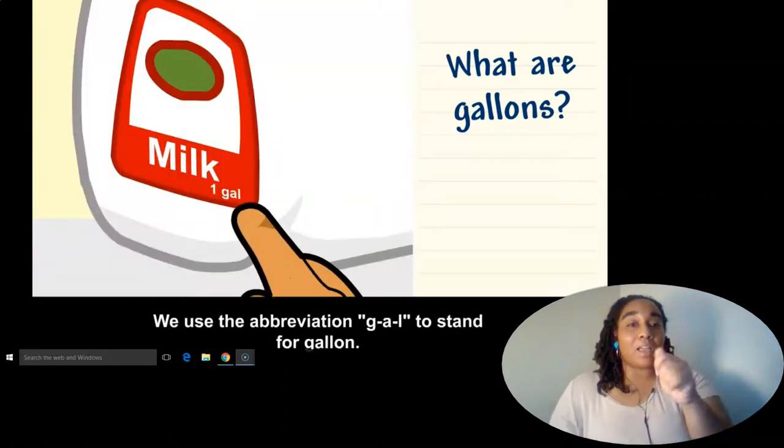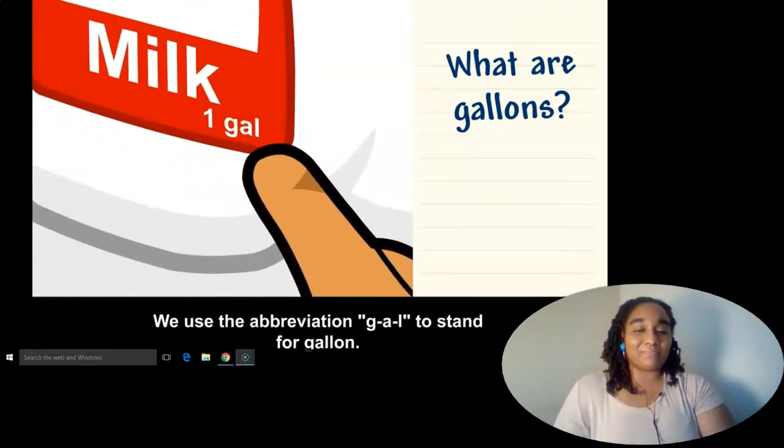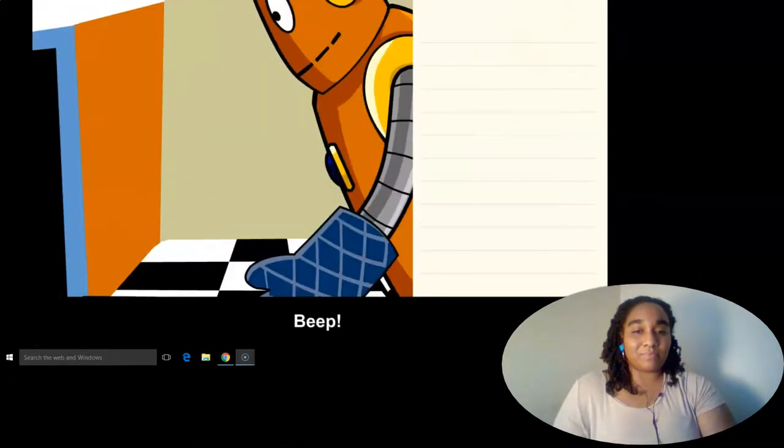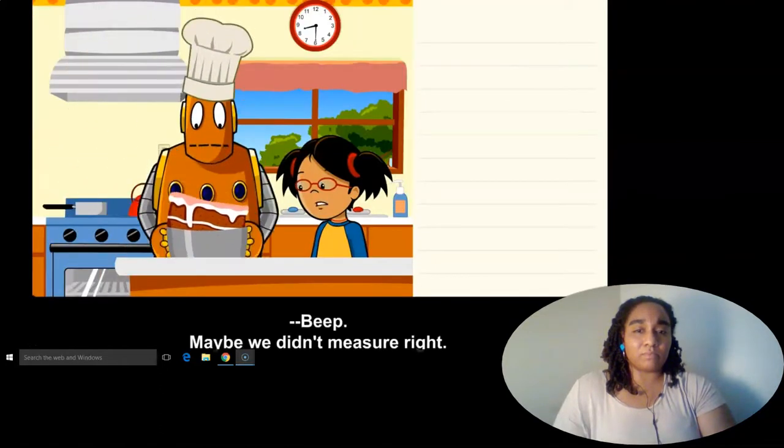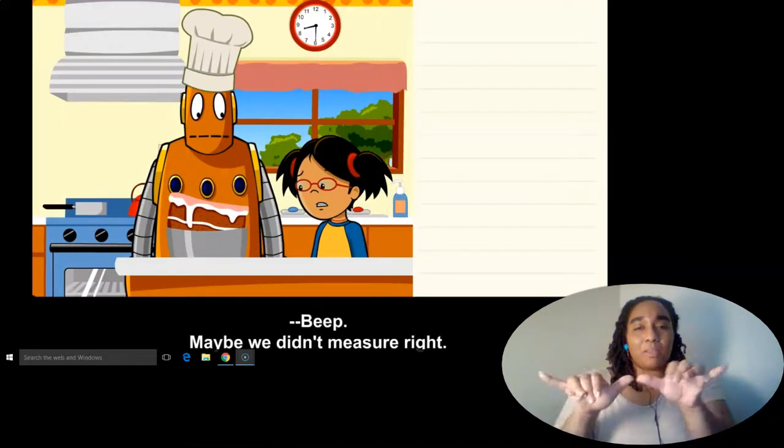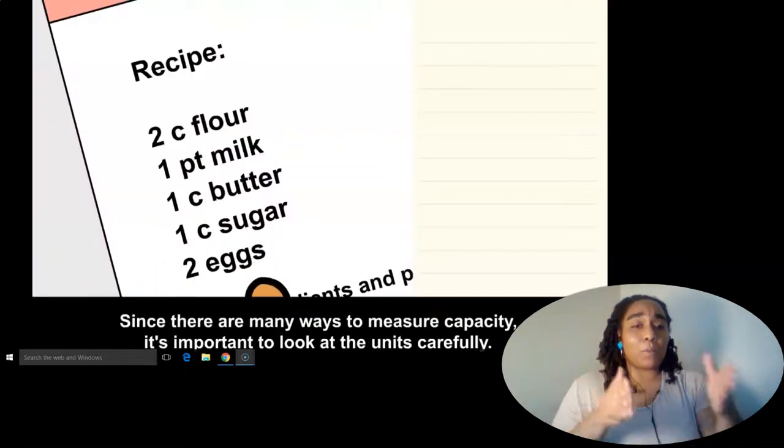We use the abbreviation GAL to stand for gallon. Maybe we didn't measure right. Since there are many ways to measure capacity, it's important to look at the units carefully.